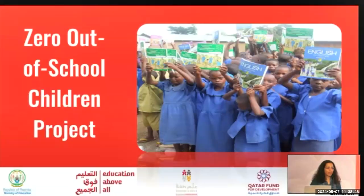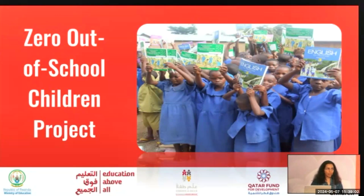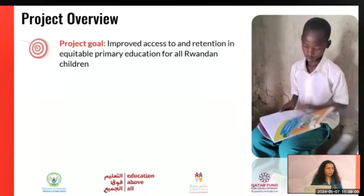The Rwanda project is a joint collaboration between the Ministry of Education in Rwanda, Education Above All — which has its foundation in the Educate A Child program — as well as Save the Children. The project goal is to ensure improved access to education and retention of all children in primary schools in Rwanda.